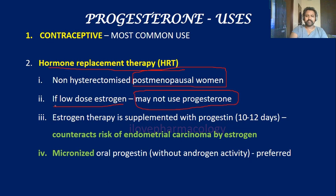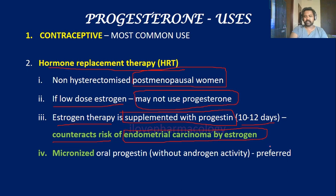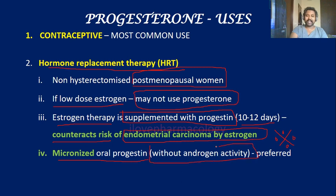Whenever you use a higher dose of estrogen, always remember estrogen therapy is supplemented with progesterone for 10 to 12 days. The reason is it counteracts the risk of endometrial carcinoma caused by estrogen. Supplementing with progesterone will reduce this risk, and micronized oral progesterone without androgenic activity is preferred.